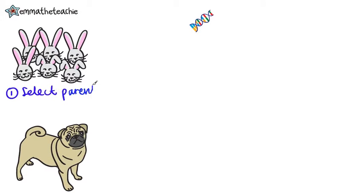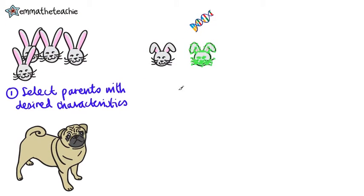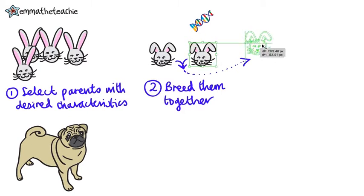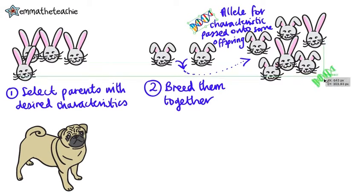First, you must select the parents that have the desired characteristics. For example, maybe floppy-eared bunnies are more popular pets, so you would select two parents that have floppy ears. The second step is to then breed them together. They will produce lots of offspring, some of which will have the floppy ears, because the allele for the characteristic is not always passed on to every offspring — just some.